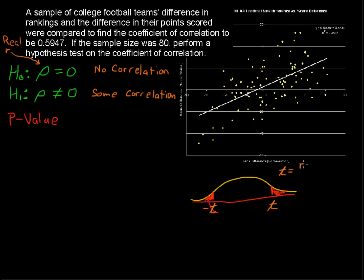times the square root of n minus 2. So 80 minus 2 is in there. And then you have the square root of 1 minus r squared.